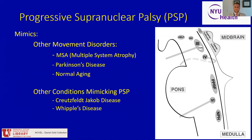There are other primary neurodegenerative conditions on the differential diagnosis for PSP, including multiple system atrophy, Parkinson's disease, and normal aging in which older individuals can also have restricted range of vertical, especially upgaze. Other non-neurodegenerative conditions that can mimic PSP include the prion disease Creutzfeldt-Jakob, in which people can have frequent square-wave jerks and gaze deficits, as well as Whipple's disease, an infectious entity from the organism Tropheryma whipplei, which can be clinically very similar to PSP.